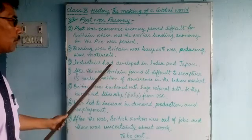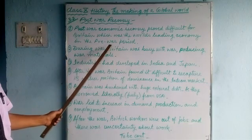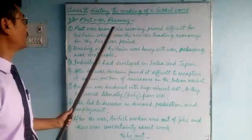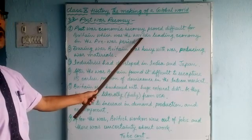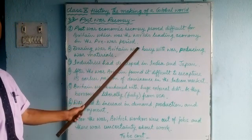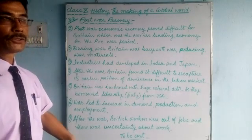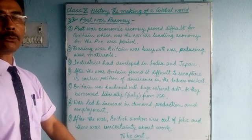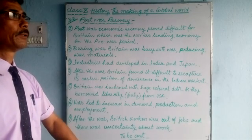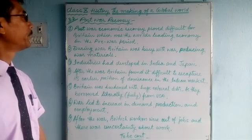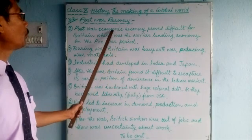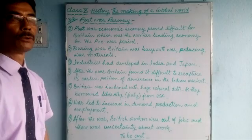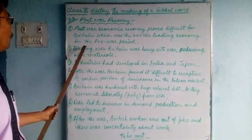There are seven points. Point number one: post-war economic recovery proved difficult for Britain, which was the world's leading economy in the pre-war period. Before the war, Britain was the leading economy in the world — the richest country — but after the war, Britain found it very difficult to recover.